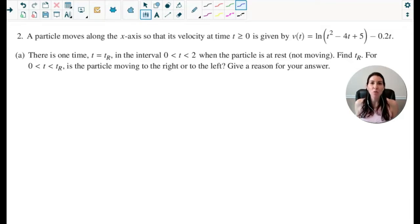So part A says there is one time t in the interval from zero to two when the particle is at rest or not moving, and we need to find that time. And then we'll move on to the second part. The first thing to take note of is a particle is at rest when velocity is zero.